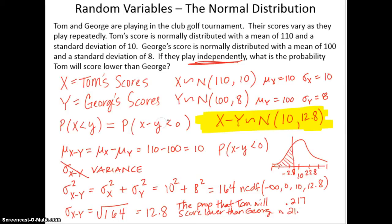So the probability that Tom will score lower than George is 21.7%. So take their question, what is the probability Tom will score lower than George and turn it into an answer. The probability that Tom will score lower than George is 21.7%.